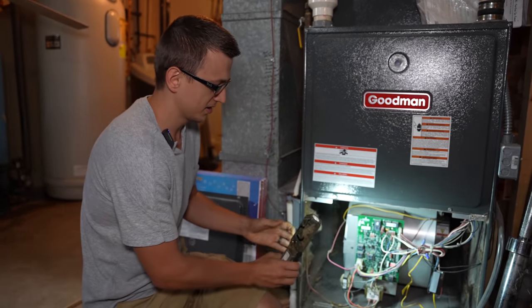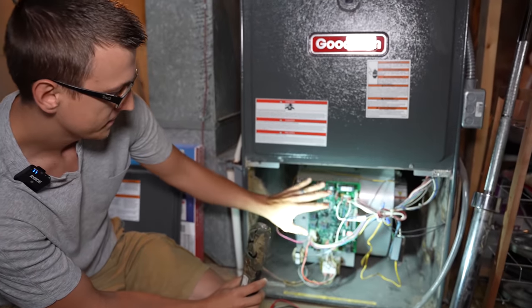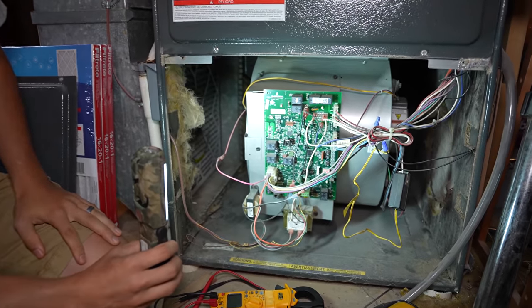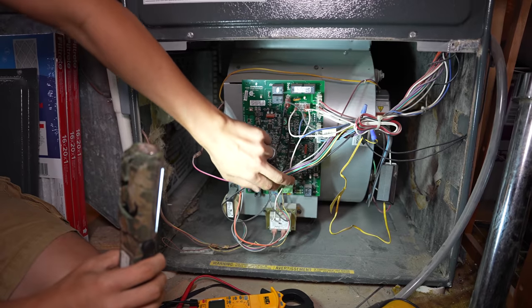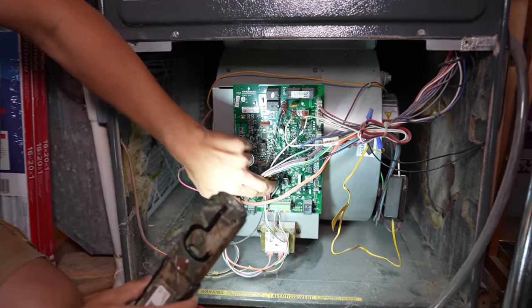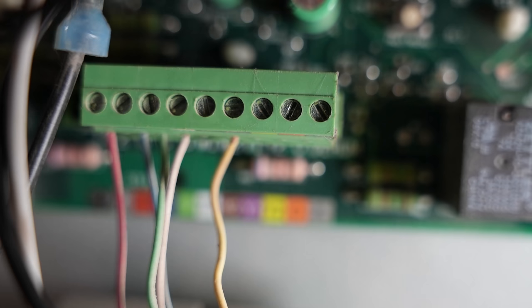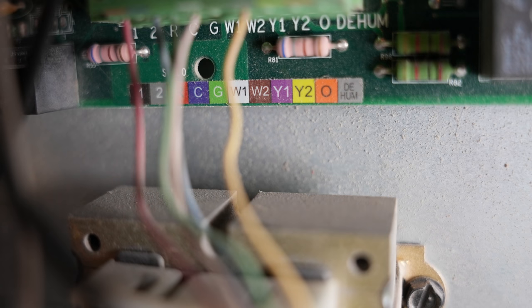So here's a typical furnace control board. This is what it would look like, and most control boards will have a 24 volt terminal strip, like this green thing right here. That's where it is on this control board.